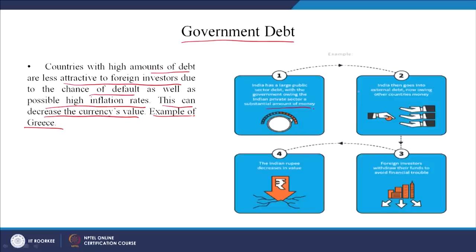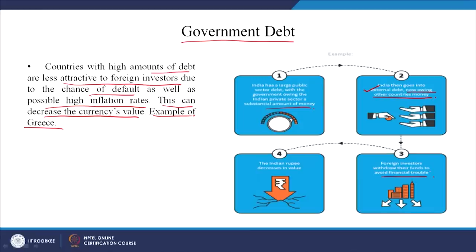India then goes into external debt because they require money, owing other countries money. We have taken loans from other places; foreign investors withdraw their funds to avoid financial trouble. When there is instability in the country due to maybe civil problems or any problem, the foreign investors withdraw their funds and the Indian rupee decreases in value. This has happened in the recent past - in the last few years the Indian rupee has decreased in value, and it has become more of a problem, at least by 2019 it has become a serious issue.